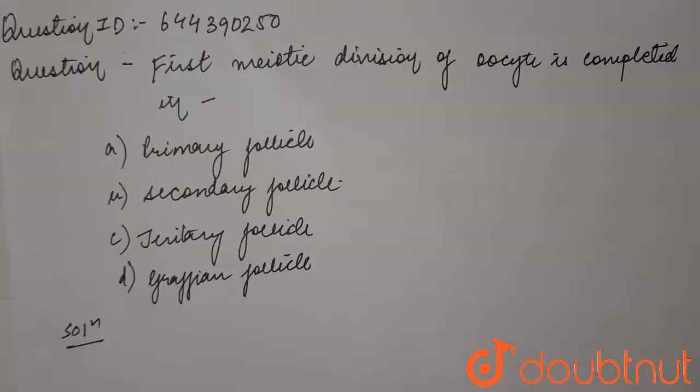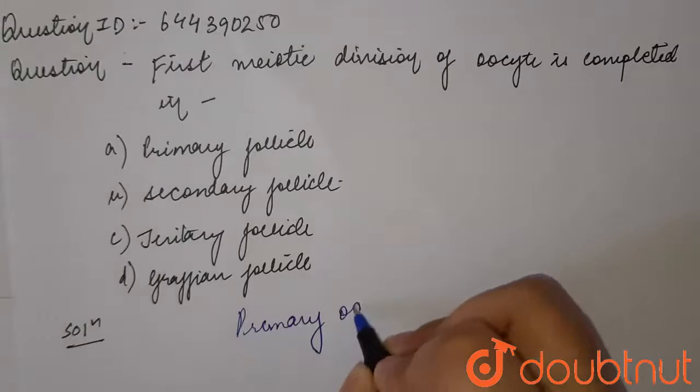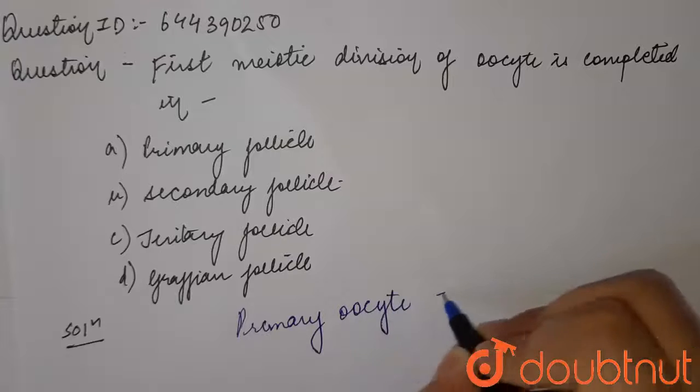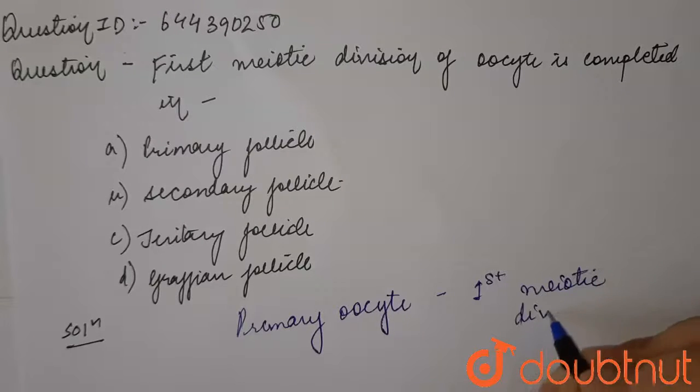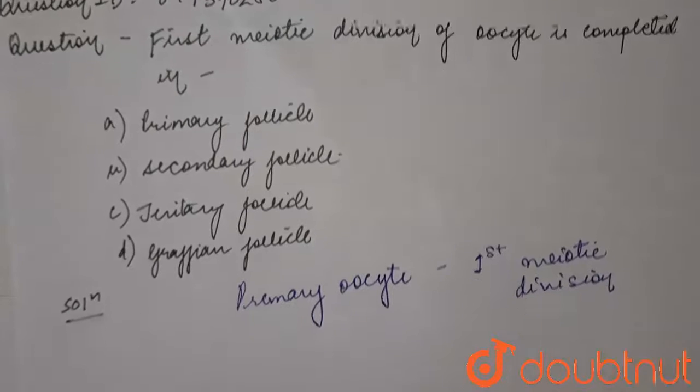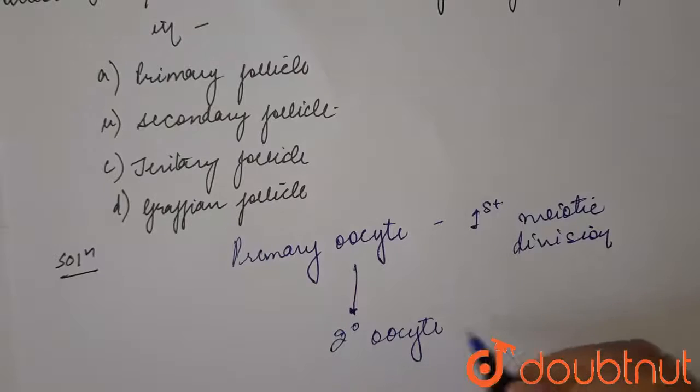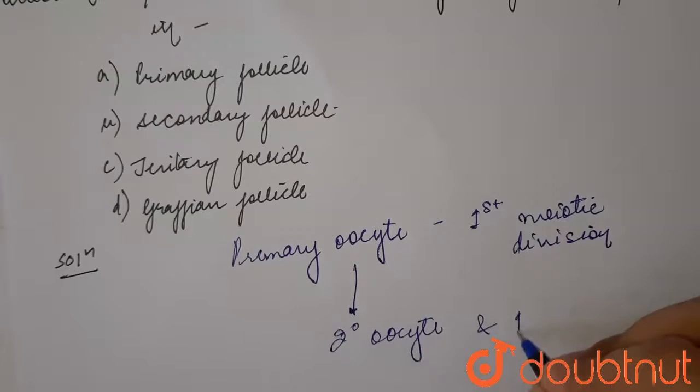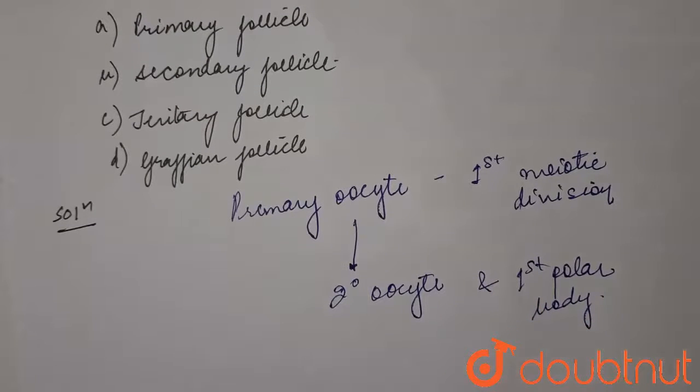Meiotic division occurs in the primary oocyte. The primary oocyte undergoes the first meiotic division and produces the secondary oocyte and the first polar body. There are many processes that happen before that, and there is ovulation. The first and second polar bodies are non-functional cells.